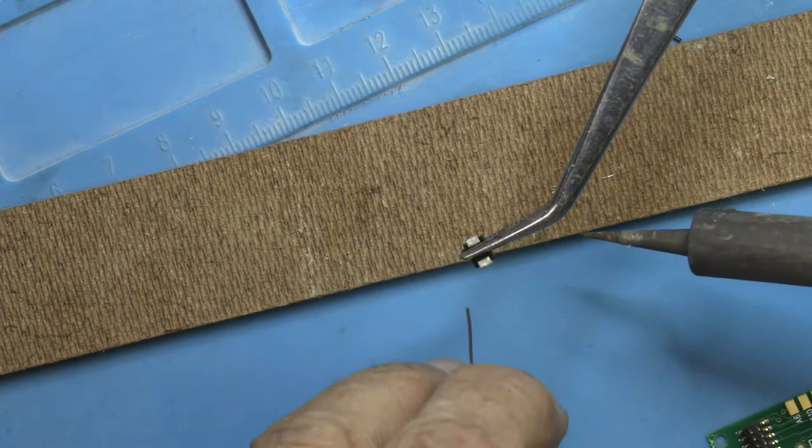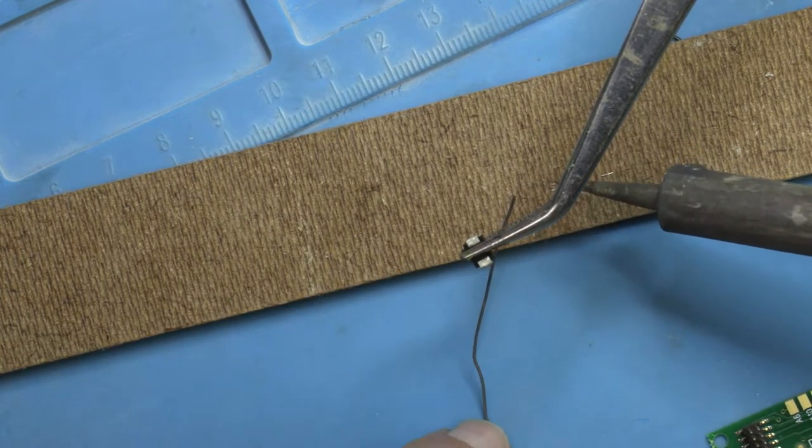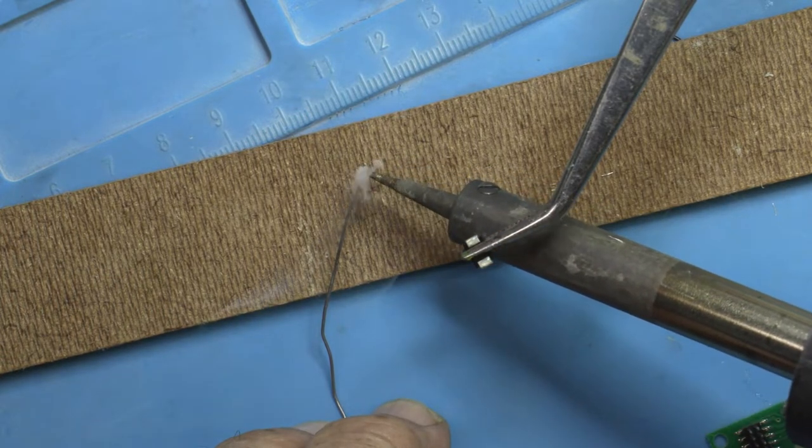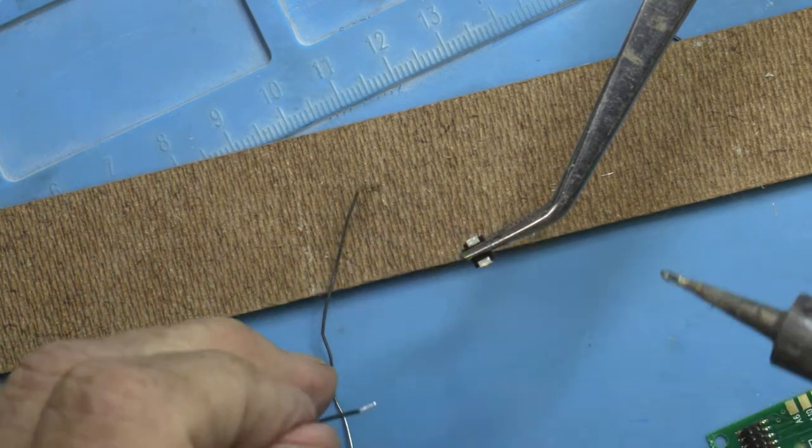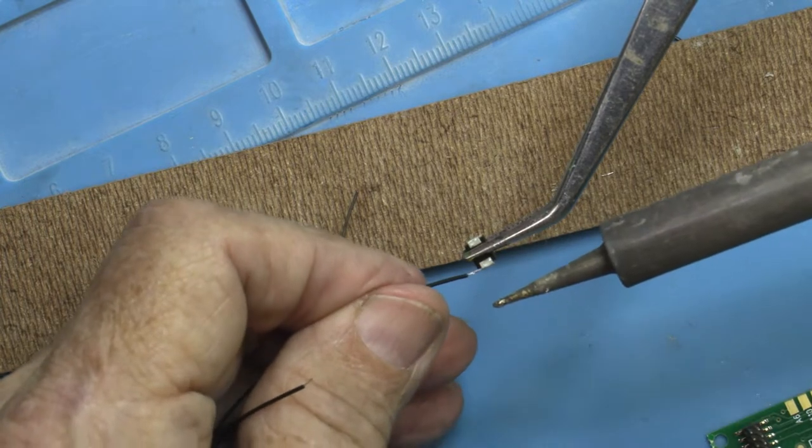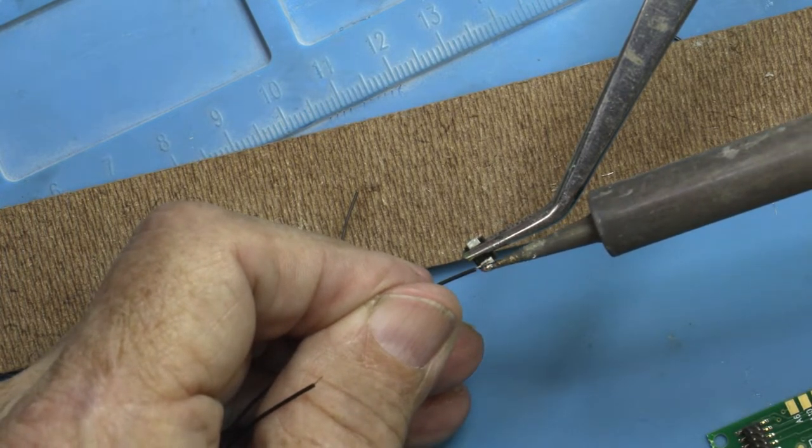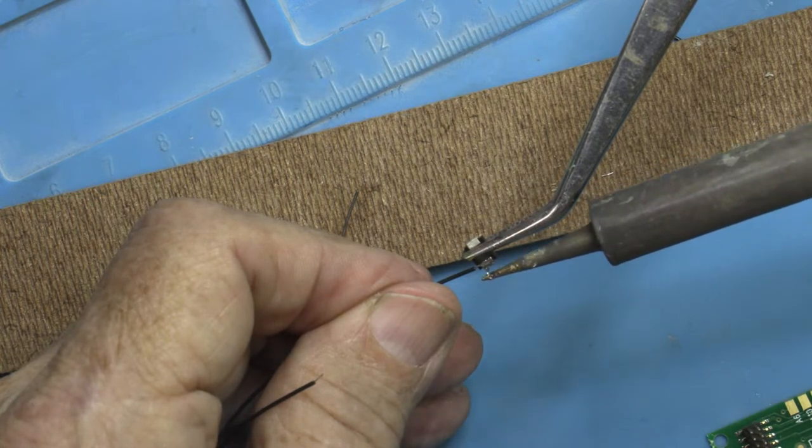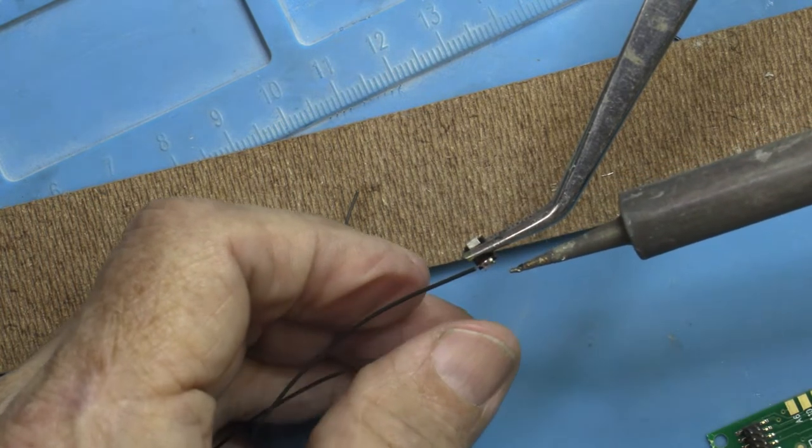And this will be a fairly quick operation also. This time what I'm going to do is I'm just going to take a little bit of solder on the soldering iron tip and just briefly melt some solder on there.